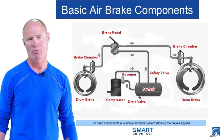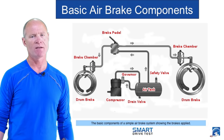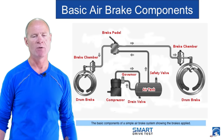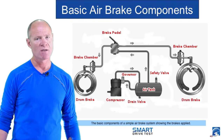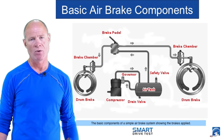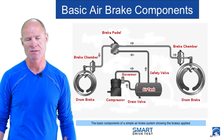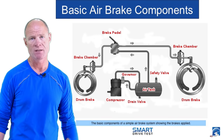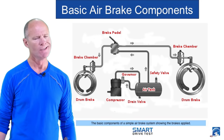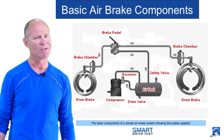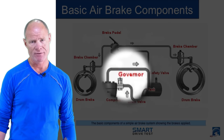The only difference between a compressor in a garage and the compressor on an air brake system is that the compressor on the air brake system runs all the time that the motor is on. So we need some way to control the amount of air we put in the system, because that compressor is capable of pumping up to 500 pounds per square inch. We don't need 500 PSI — we only need a maximum of 135 pounds per square inch. So we have the governor.